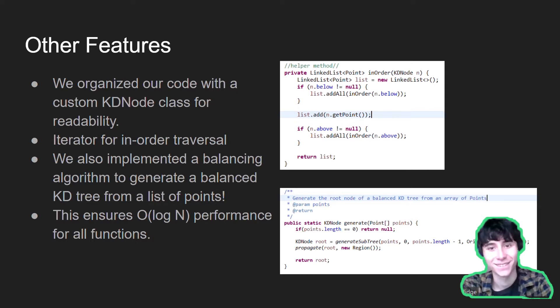This is important as it ensures O of log n performance for all functions, as if this wasn't the case and the trees weren't guaranteed to be balanced, it is possible that suboptimal cases can occur where the time is not generally logarithmic.